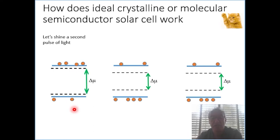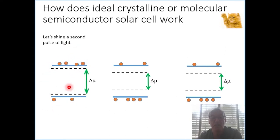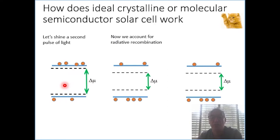If we enhance the charge density, we enhance the separation between the Fermi levels, and the distance between the Fermi level and the relevant band becomes shorter to indicate the fact that we have a larger density of carriers. As you can see here again, there is no loss due to recombination, which of course is non-physical because if there was absorption, there would also be an emission.